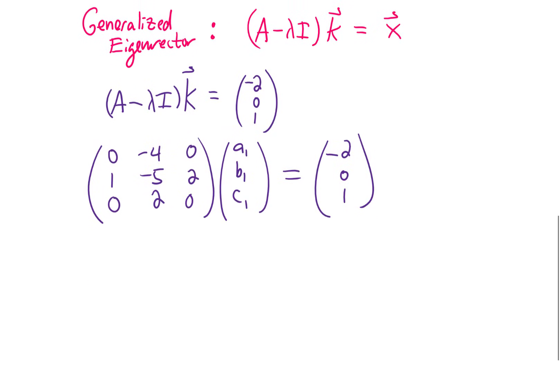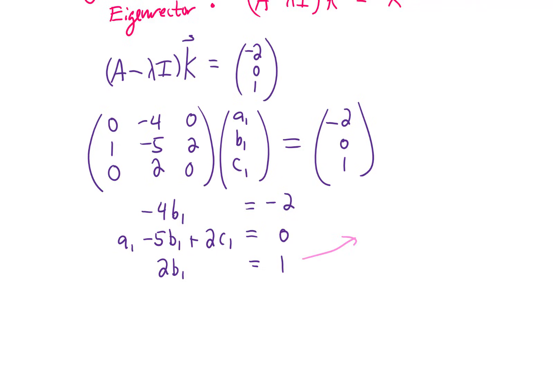Alright, so this system of equations gives us the following. You will notice right off the bat that either equation one or equation three gives us a b₁ value of one half. Plugging that b₁ value into the second equation gives us this formula right here, which we can rewrite. Okay, and now we have another free variable here. We can feel free to choose a₁ or c₁ to be whatever we like. We have many options.